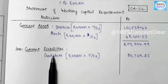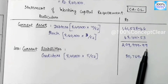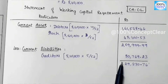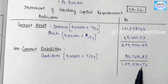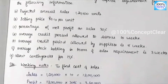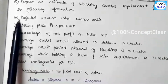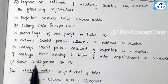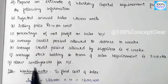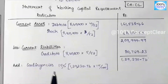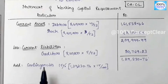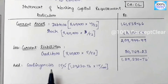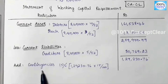We subtract current assets minus current liabilities: Rs. 2,09,999.99 minus Rs. 80,769.23 gives us Rs. 1,29,230.76. We used all the information: profit, debtors, creditors, and stock. Last, we have to add contingencies.